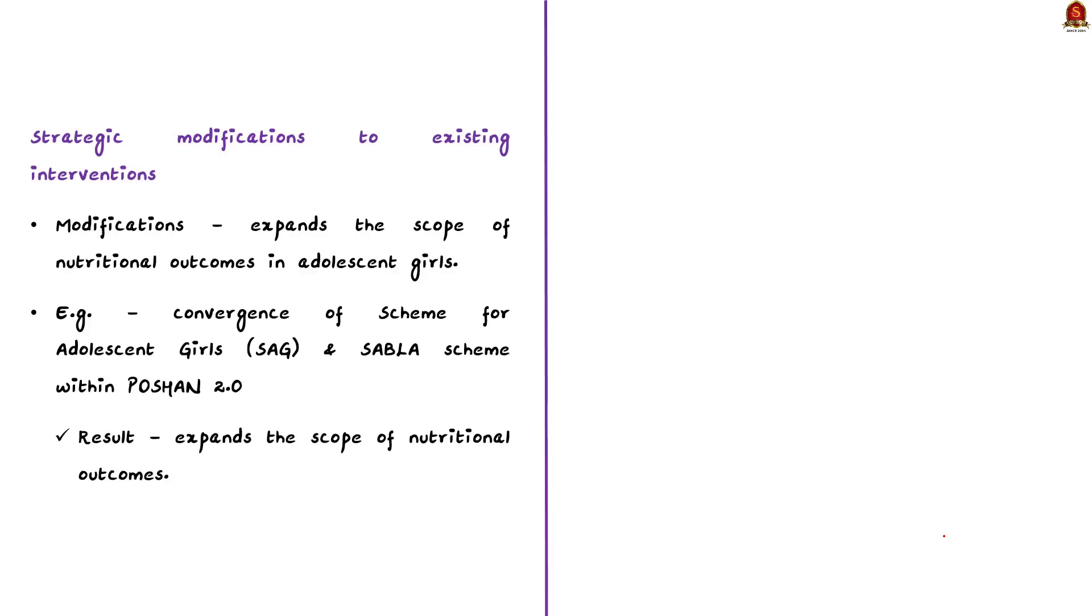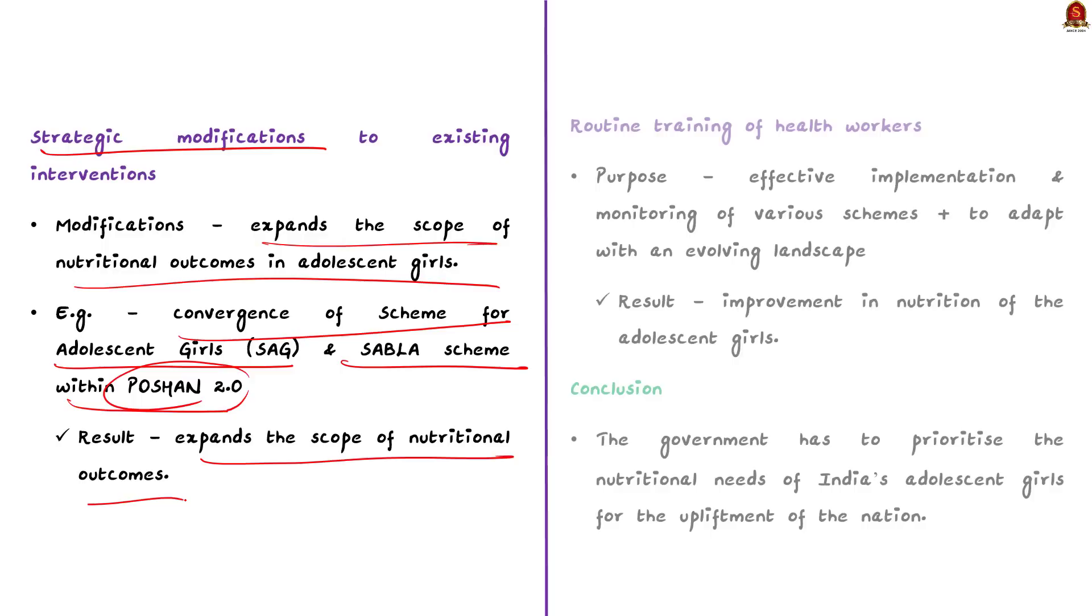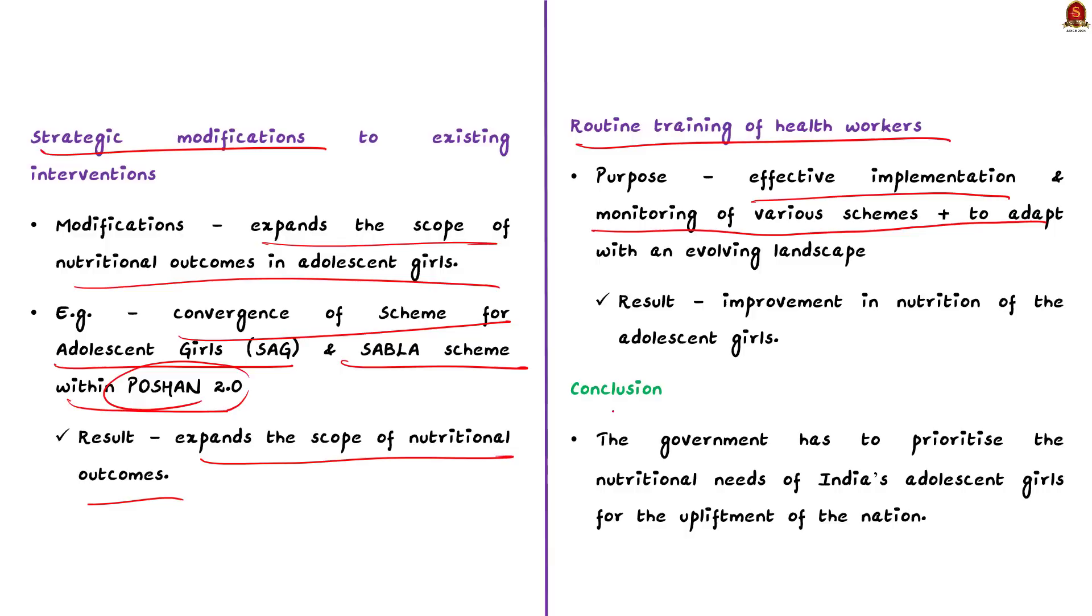In addition to this, a few strategic modifications to existing interventions can also significantly expand the scope of nutritional outcomes in adolescent girls. For example, the convergence of various government initiatives such as the Scheme for Adolescent Girls and Sabla Scheme within the Umbrella Scheme of the Poshan 2.0 will expand the scope of nutritional outcomes. Apart from this, the routine training of health workers for effective implementation and monitoring of various schemes and to adapt with the evolving landscape will also help to improve the nutrition in adolescent girls. To conclude, the government has to prioritize the nutritional needs of India's adolescent girls for the upliftment of the nation. I hope you understood the point from this editorial.